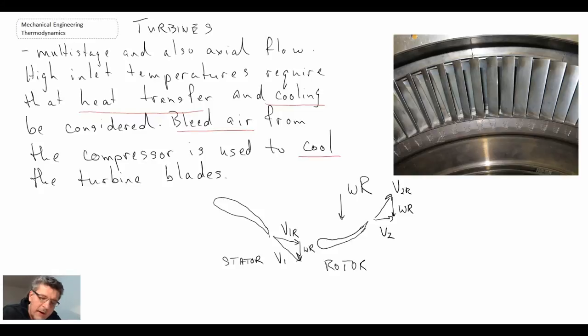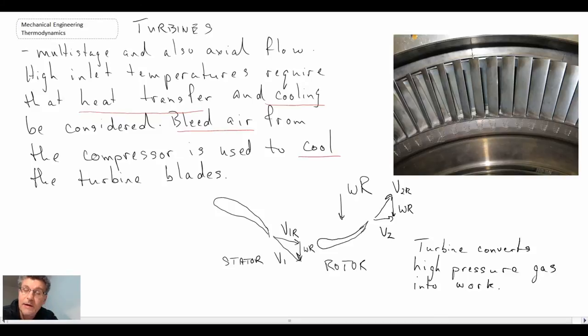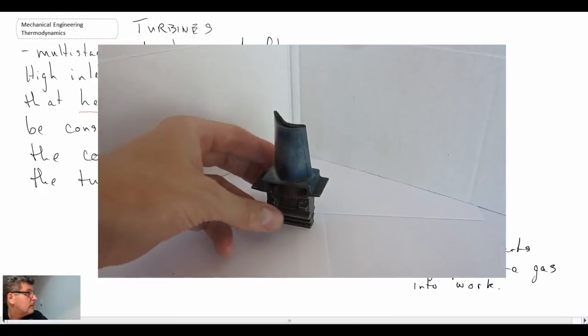So what the turbine is doing is converting high pressure and temperature gas, so high enthalpy fluid, into work. What I'll do now is we'll take a quick look at a video with an actual turbine blade, and that gives you an idea as to some of the cooling mechanisms that might be within the turbine. So let's take a look at that.